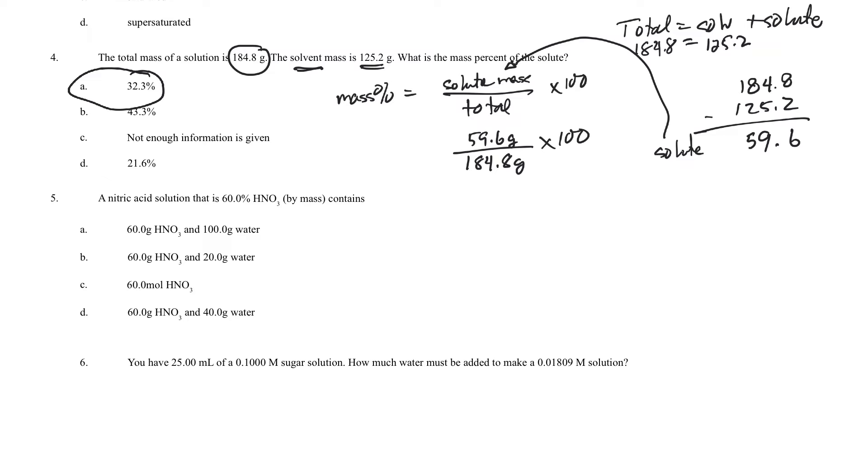Okay, the next question says nitric acid, 60% nitric by mass. So the 60% means per 100 grams, there's going to be 60 grams of nitric acid, and then the rest of the solution, 60% is solute, and 40% is going to be solvent to make up the 100.